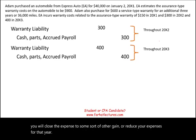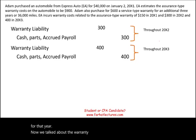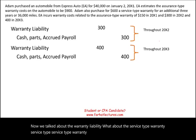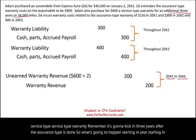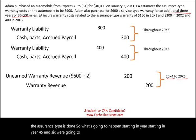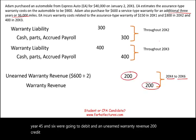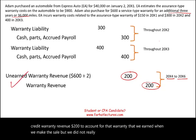Now for the service type warranty: remember, it kicks in after the assurance type is done. Starting in year four, five, and six, we debit unearned warranty revenue $200 and credit warranty revenue $200 each year — recognizing the $600 revenue on a straight-line basis over three years, as the service is performed.